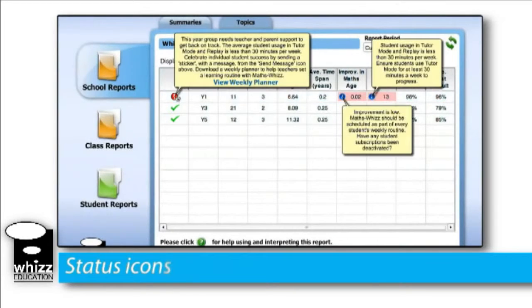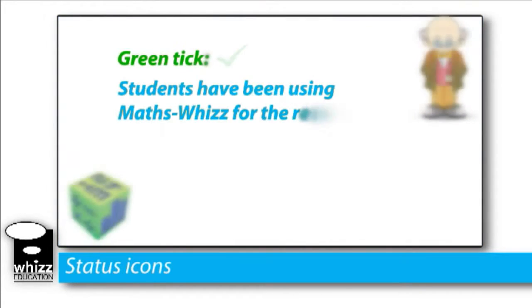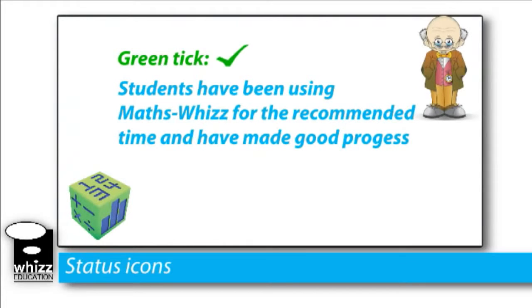First of all, you'll notice that we've added a status icon. This will either be a green tick, a red exclamation mark, or a yellow triangle. The green tick suggests that students who have MathsWiz have been using it for the recommended time and as a result have made the progress that we would anticipate to see.